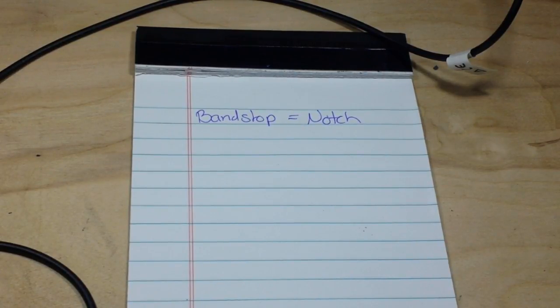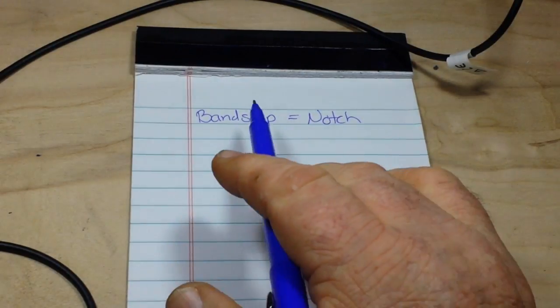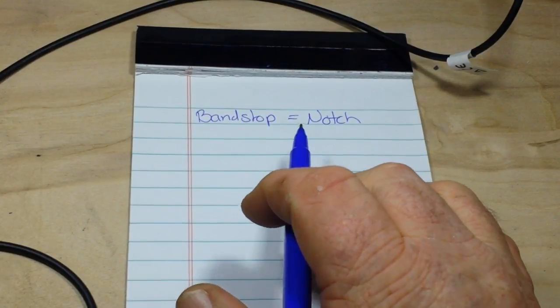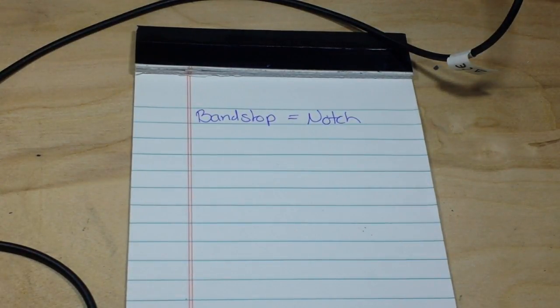Okay, so we have talked about in the past high pass filters, low pass filters, and band pass filters. So today, we're going to talk about bandstop filters, the complete opposite, also known as a notch filter.